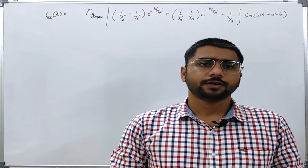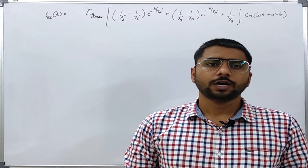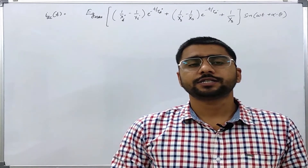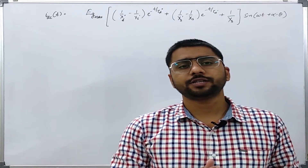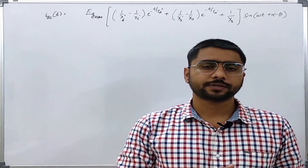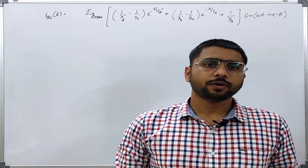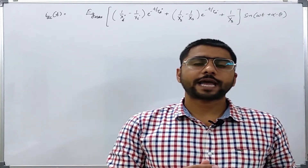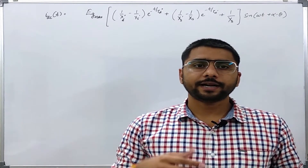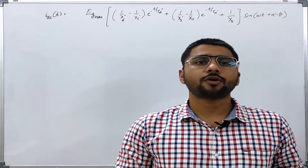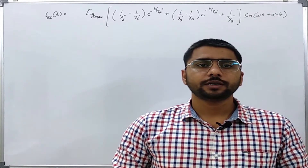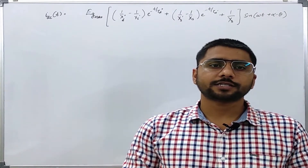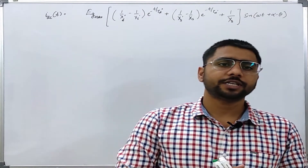In our previous lecture, we saw how the currents vary whenever a synchronous generator is short-circuited on its terminals. During that discussion, although it was not explicitly stated that we are dealing with a round rotor machine, it was assumed that we are first dealing with the round rotor machine, that's why XS was used.